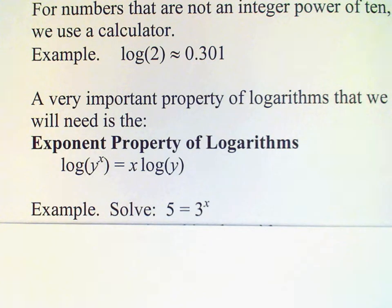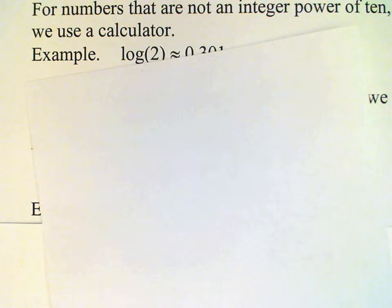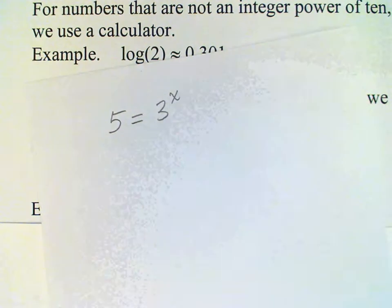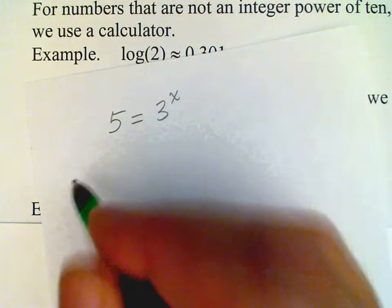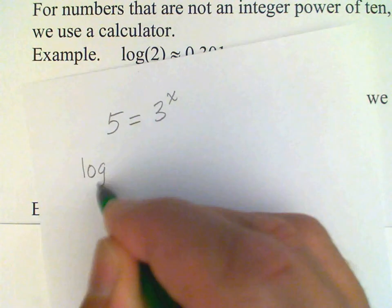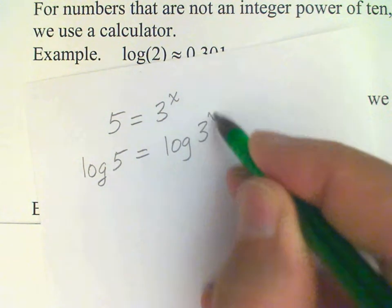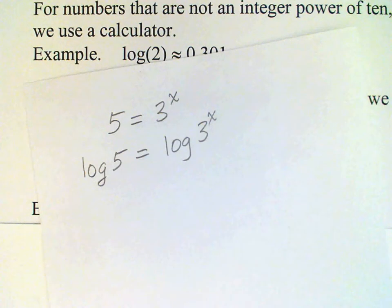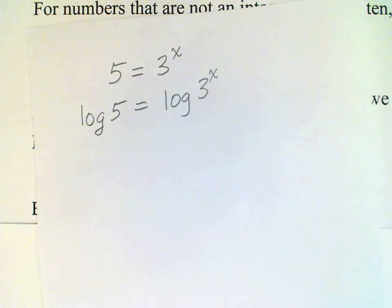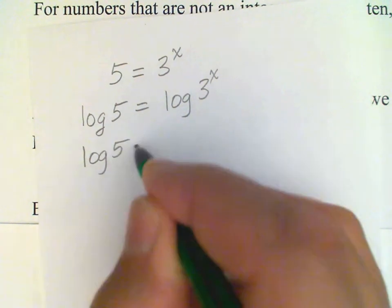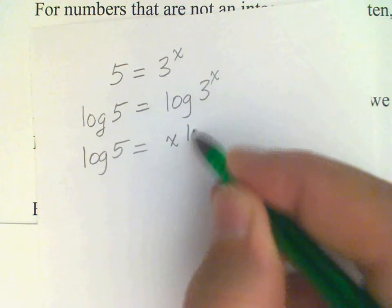So, for example, if I have to solve 5 equals 3 to the x power, I'm going to start by taking the logarithm of both sides of the equation. I have log 5 equals log 3 to the x power. And then use the exponent property of logarithms on the right hand side. That will give me log 5 equals x times log 3.